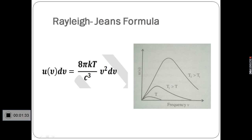Rayleigh and Jeans derived the formula for the energy density in the frequency interval between ν and ν + dν, given by u(ν)dν = (8πkT/c³)ν²dν. This is called the Rayleigh-Jeans formula.